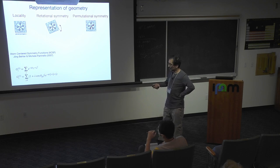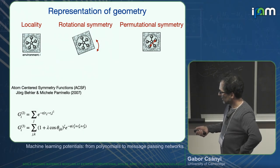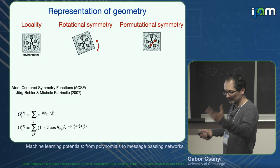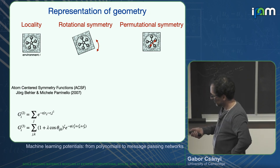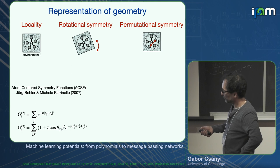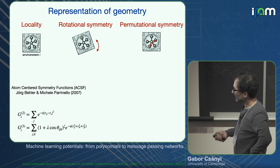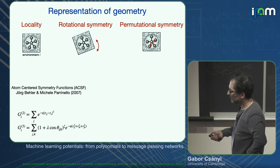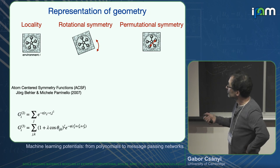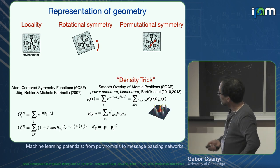Behler and Parrinello's solution was a set of descriptors. G2 descriptors: sum over atoms of a Gaussian in Rij — the distance to your neighbor — where Rn is a set of fixed numbers that becomes a parameter of the model, varying to give different descriptors. Then G3-type descriptors doing the same thing for angles — theta_ijk, the angle between neighbors j and k, with a Gaussian cutoff at large distances, summing over pairs of neighbors. Together, these are rotationally and permutationally symmetric.